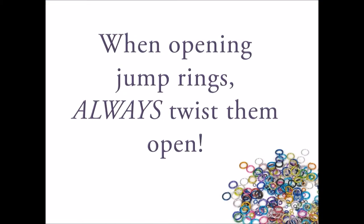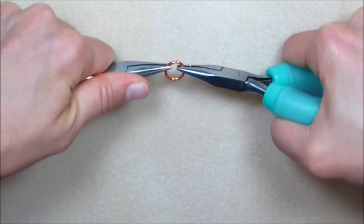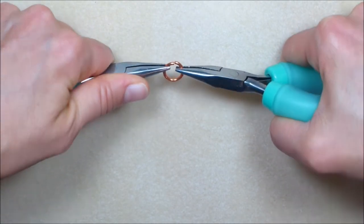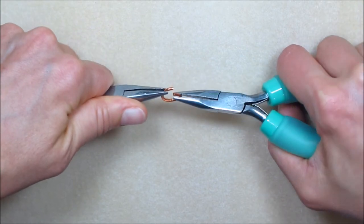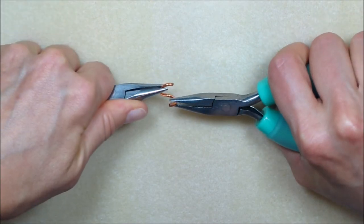That said, when opening jump rings, always twist them open. So to open a jump ring, the best place to hold for leverage is around one or two o'clock with your right hand and 10 or 11 o'clock with your left. Keeping a firm hold on both pliers, twist the right pliers towards you and the left pliers away from you.